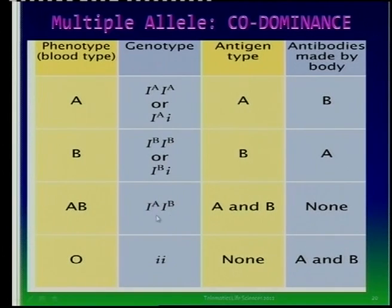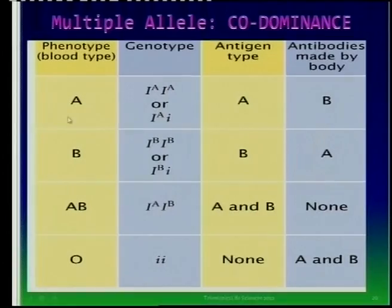If you are blood group AB, you can receive blood from everybody. If you are blood group O, the blood service is after your blood because you can donate to anybody. Please make sure you know that A, B, AB, and O are the phenotypes. When writing genotypes, remember A and B each have two possible genotypes, whereas AB and O only have one.